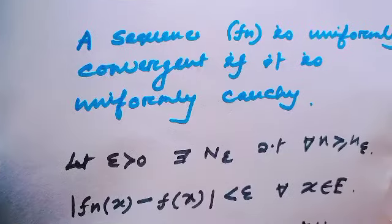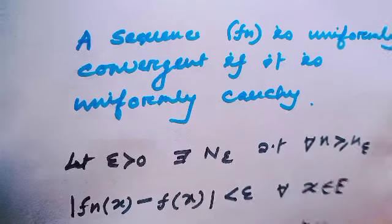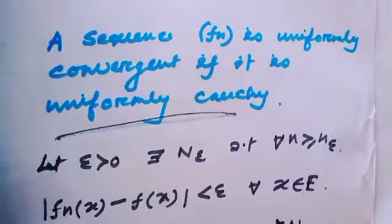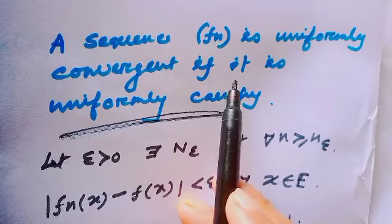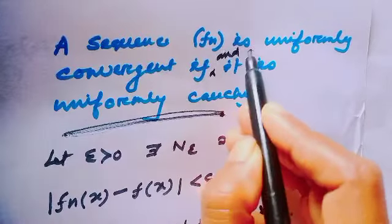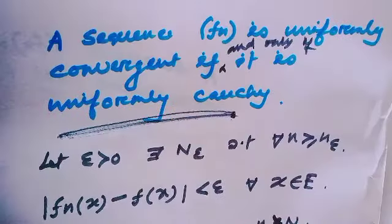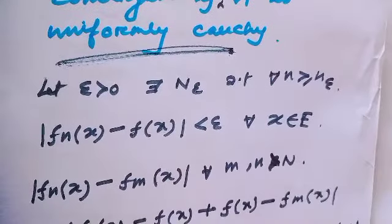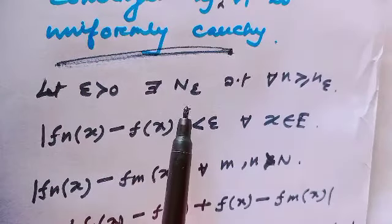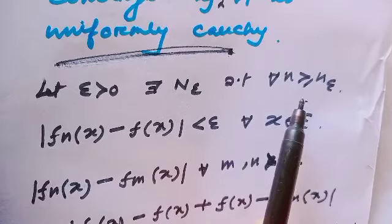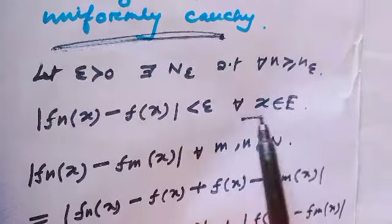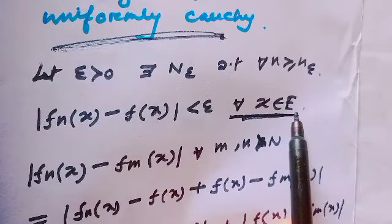Here is one important theorem for finding uniform convergence: a sequence of functions fn is uniformly convergent if and only if it is uniformly Cauchy. This is an if-and-only-if condition. We will now prove this theorem.